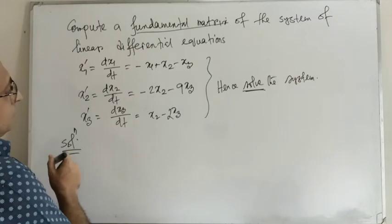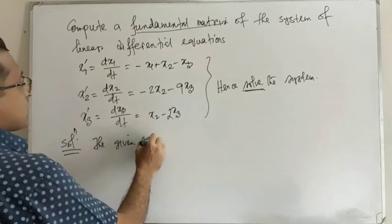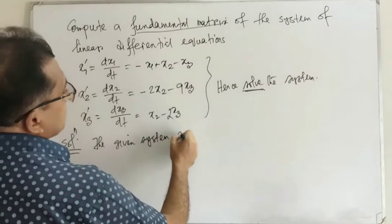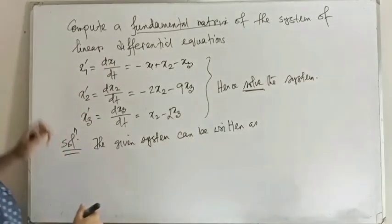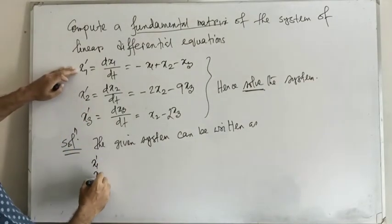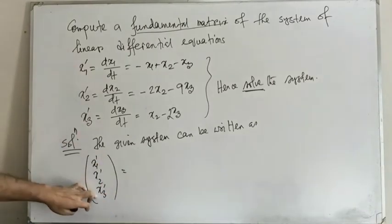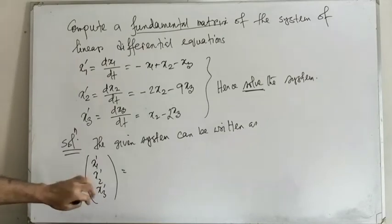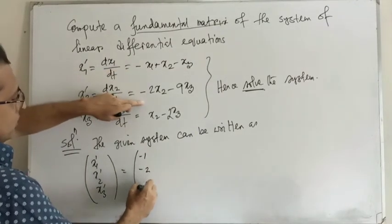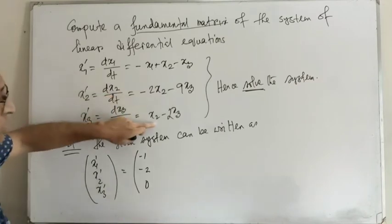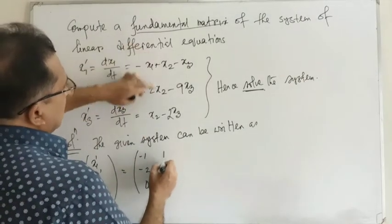The given system can be written as x1 prime, x2 prime, x3 prime. In matrix notation, this is a row matrix x1 prime, x2 prime, x3 prime. The coefficient of x1 is minus 1, minus 2, then 0, because in this equation there is no coefficient of x1, so it will be 0.